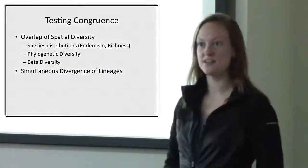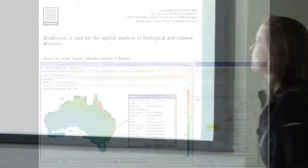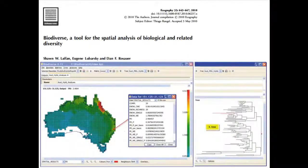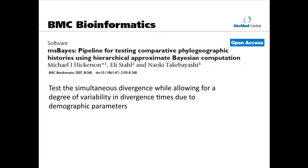Luckily, there are two great programs for this. We have Biodiverse, which looks at a phylogenetic tree and tells you where these unique haplotypes are found in relation to the map. And we also have MS Phase, which allows us to test for simultaneous divergence while also allowing for a degree of variability, because we know that populations of different species are not going to respond in exactly the same way.